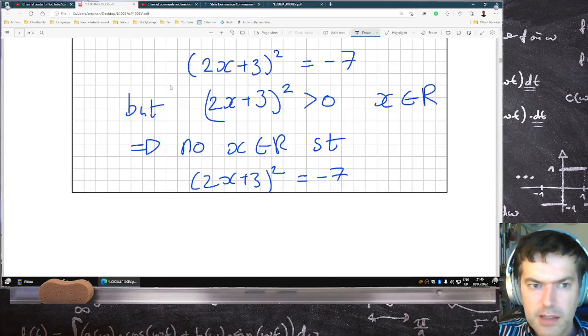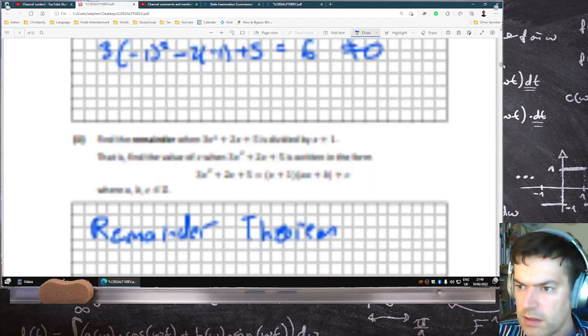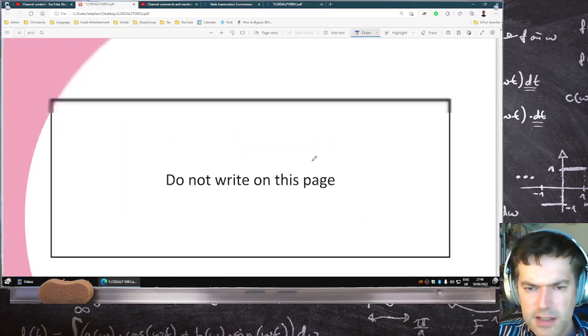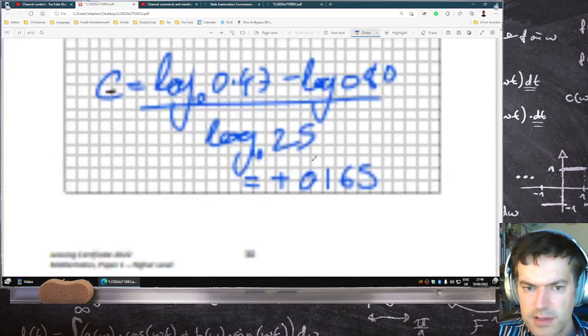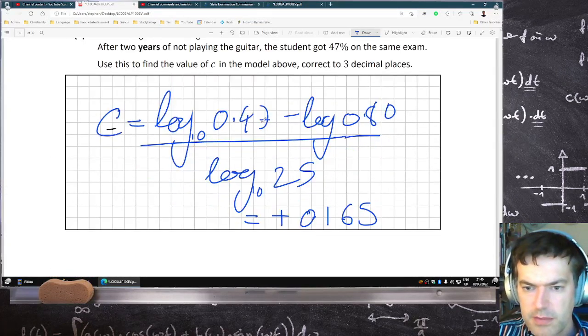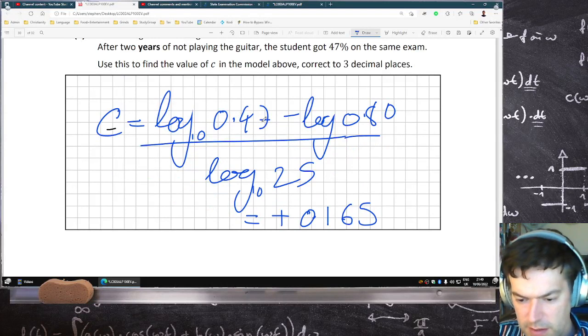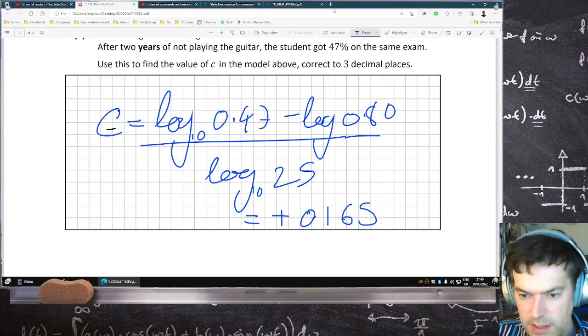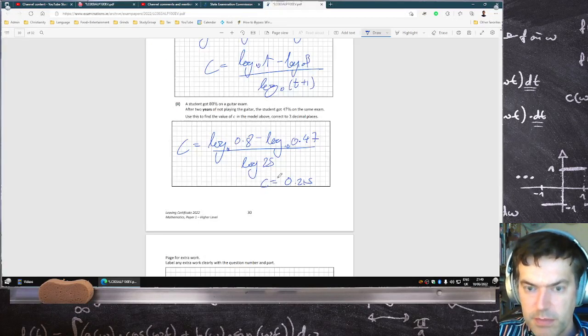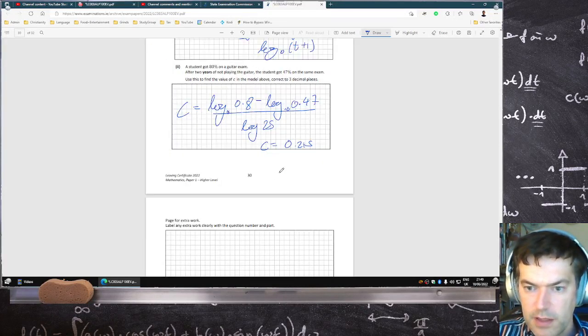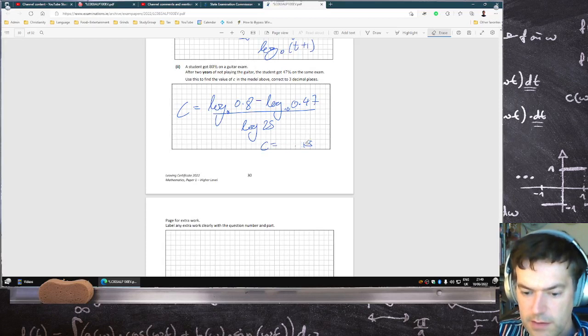That's quite different to what I got when I did it wrong with the signs. I don't think the signs would affect the answer. Log 0.47 minus log 0.8. I wrote four instead of four seven. Yeah, so positive. Yeah, so positive 0.165.